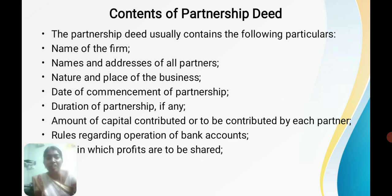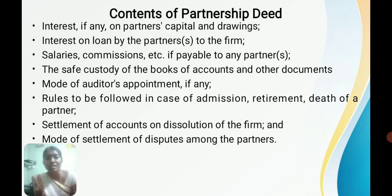Next, rules regarding operation of banking accounts — which type of bank accounts to maintain and how amounts are withdrawn and deposited are detailed in the deed. Then the ratio in which profits and losses are to be shared is mentioned. Next, interest — there are two types: interest on capital, which is paid by the firm to the partner, and interest on drawings, which is paid by the partner to the firm. Both the rate of interest on capital and on drawings are mentioned in the partnership deed.